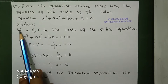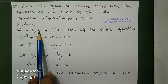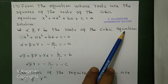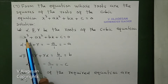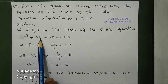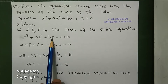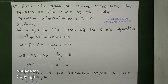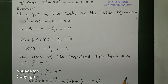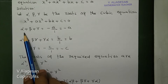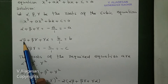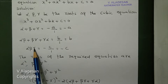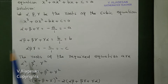Let alpha, beta and gamma be the roots of the cubic equation x³ + ax² + bx + c = 0. Now we will find the sum of roots, sum of the product of the two roots, and product of roots.